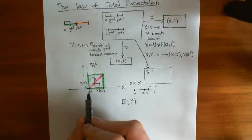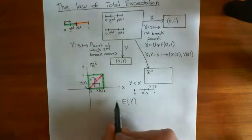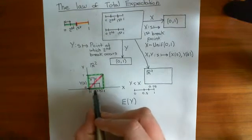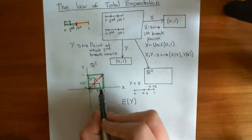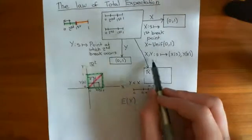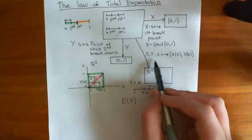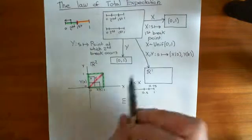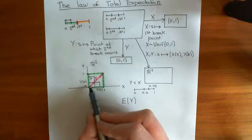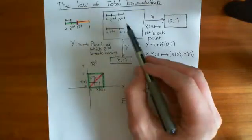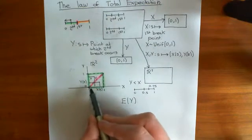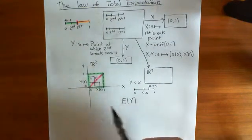I want to discuss how you can find this expected value of y through looking at this joint random variable x, y, because this joint random variable is more than just some joint random variable. It's a beautiful joint random variable — it's a bijection. Every outcome in here has a corresponding point in here.